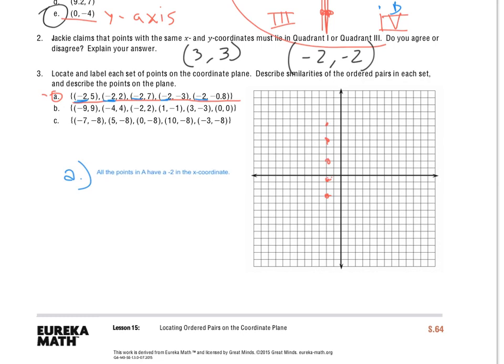So that's one thing that I'm noticing, the similarities of the points in each set. Describe the points on the plane. When I look at those points on the plane, they're in a vertical line. They're all sitting in a perfectly straight line on this coordinate plane. And that would be the best way to describe it. And it's because of this negative 2 as the x coordinate. It's going to make them all sit vertically.